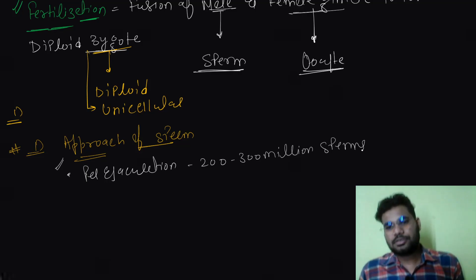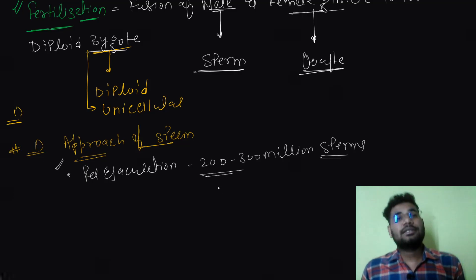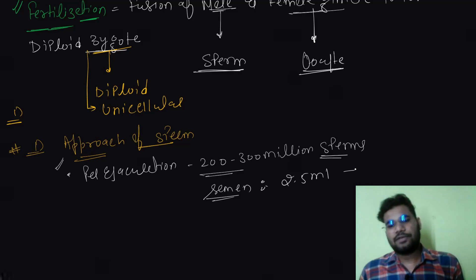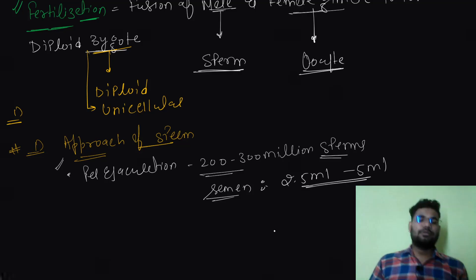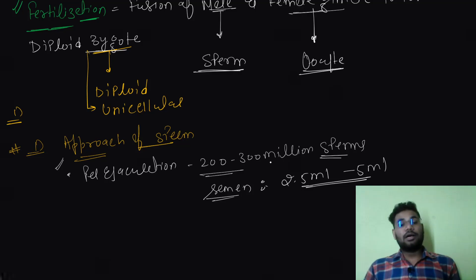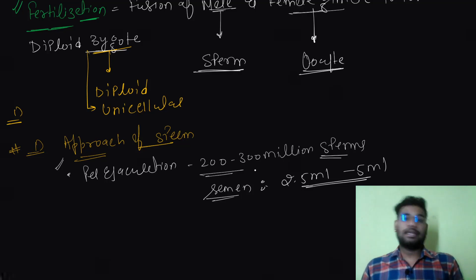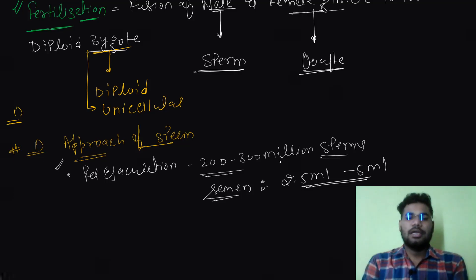The amount of semen per ejaculation is around 2.5 ml to 5 ml, which may vary from person to person. Out of these 200 to 300 million sperm deposited in the female vagina, they face many barriers.